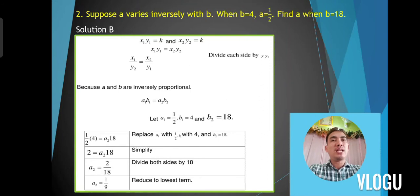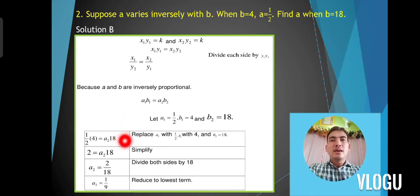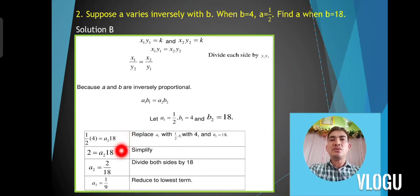Substituting: a₁ is one-half and b₁ is 4, b₂ is 18, and we are looking for a₂. So: one-half times 4 is equal to a₂ times 18. Simplify one-half times 4 to get 2 — so 2 is equal to a₂ times 18. Dividing both sides by 18, therefore a₂ is equal to 1 over 9.